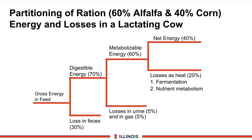Next, from digestible energy we go to metabolizable energy, very common in Europe for ration balancing with pigs and poultry. Metabolizable energy is about 60% of the total — we lose another 5% in urine losses and 5% in gas losses. That gas loss is your methane, your greenhouse gas, and that's why rumensin (an ionophore) will lower that number, making feed higher valued for dairy cattle. Finally, from metabolizable energy (ME) we go to net energy (NE) — about 40% of the total — which the animal can then use for some function.